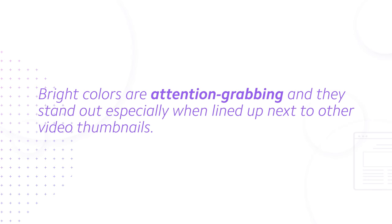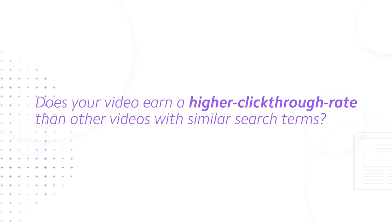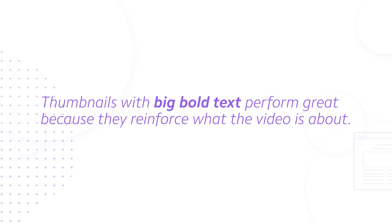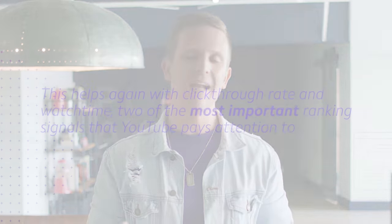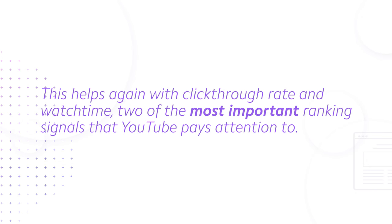Next up, bright colors. Bright colors are attention-grabbing and they stand out, especially when lined up next to other video thumbnails. This is a huge signal that YouTube looks at when ranking its videos — does your video earn a higher click-through rate than other videos with similar search terms? If it does, YouTube is likely to rank your video higher. Bright colors in thumbnails do wonders in this respect. Finally, thumbnails with big, bold text perform great because they reinforce what the video is about. If someone searches for 'Church Lobby' and sees a thumbnail with the text 'Super Church Lobby Kiosk,' they can immediately say yes, this video is for me, or no, it's not. This helps with click-through rate and watch time — two of the most important ranking signals that YouTube pays attention to.